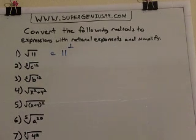And what is the denominator of this rational exponent? Well, it's 2 because the index on the square root, if there's nothing there, it's understood to be 2. So it's 11 to the 1 half power. Let's look at the next one.